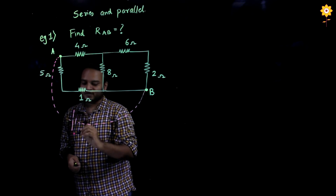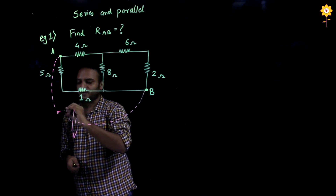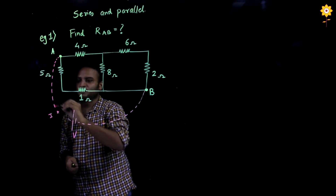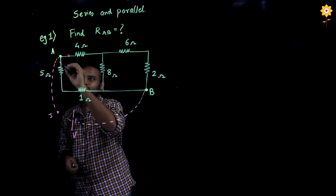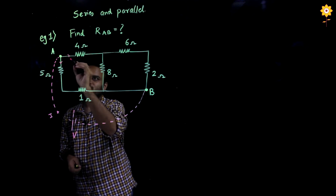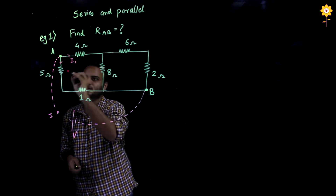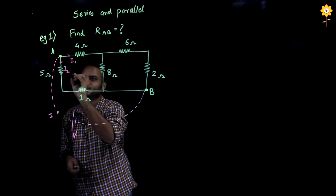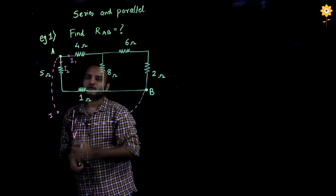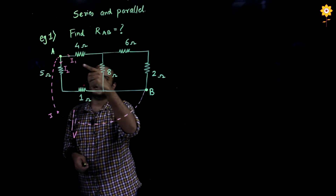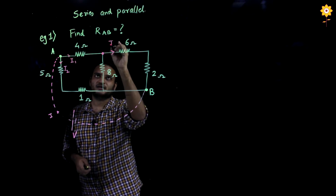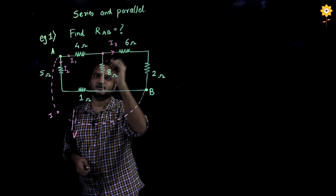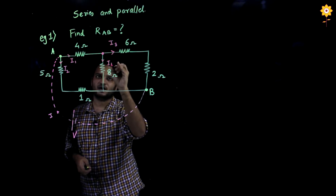If there is a battery, there will be some current flowing. This current will come at point A and it will get split up. Let us say this is current I1 and this is current I2. Now, further if I trace the current I1, at this particular point it is going to get split up. Let us say this is current I3 and this is current I4.